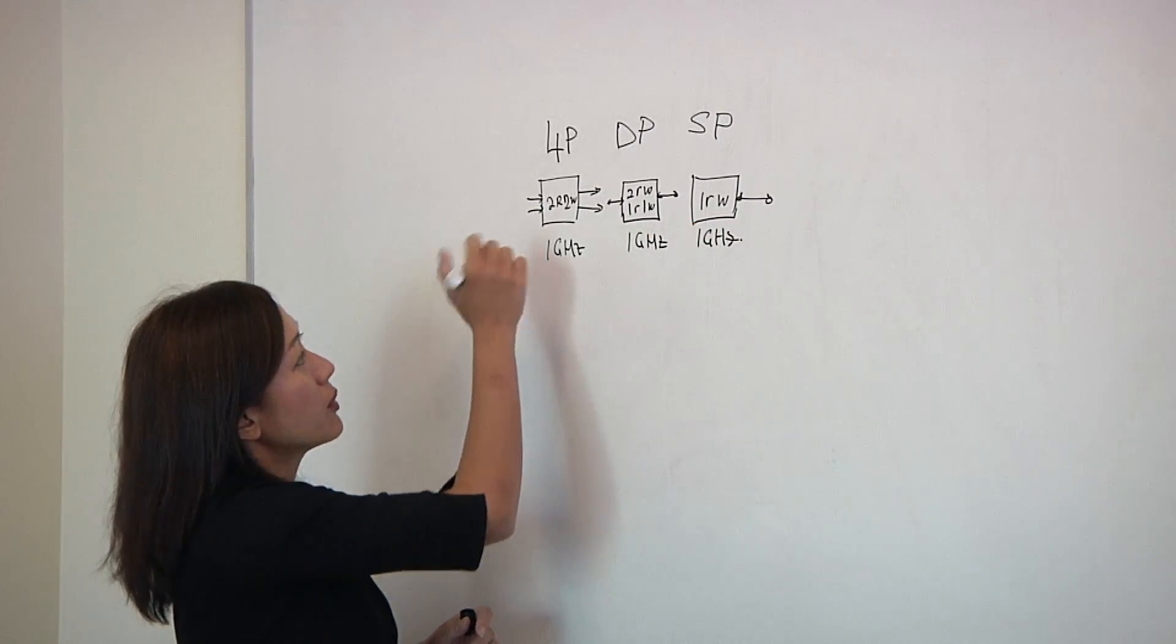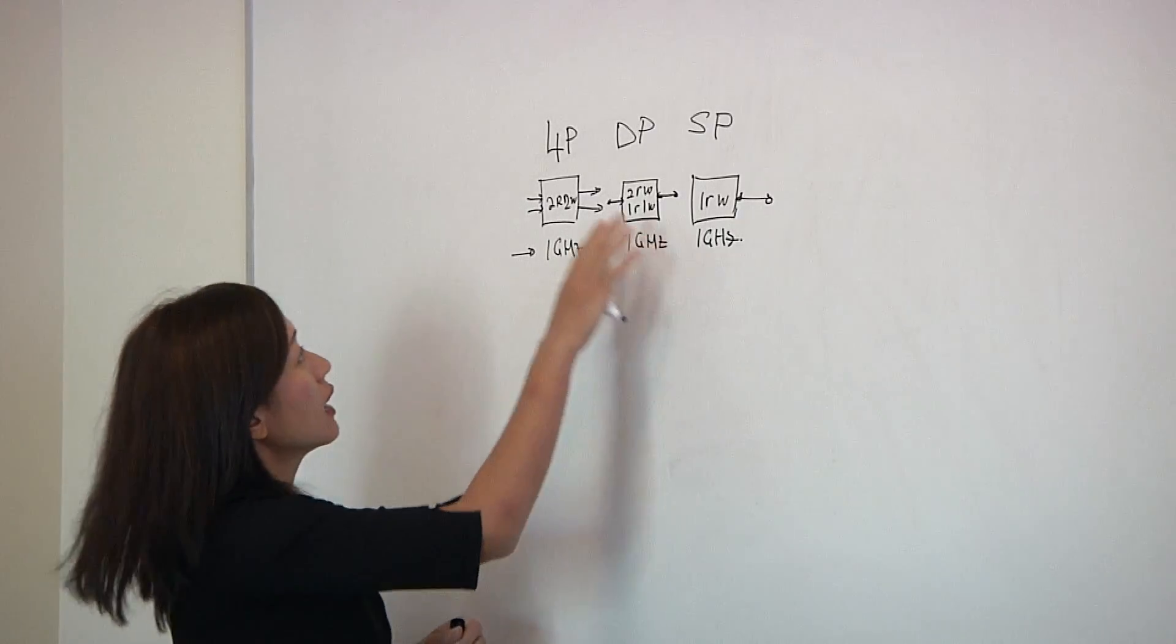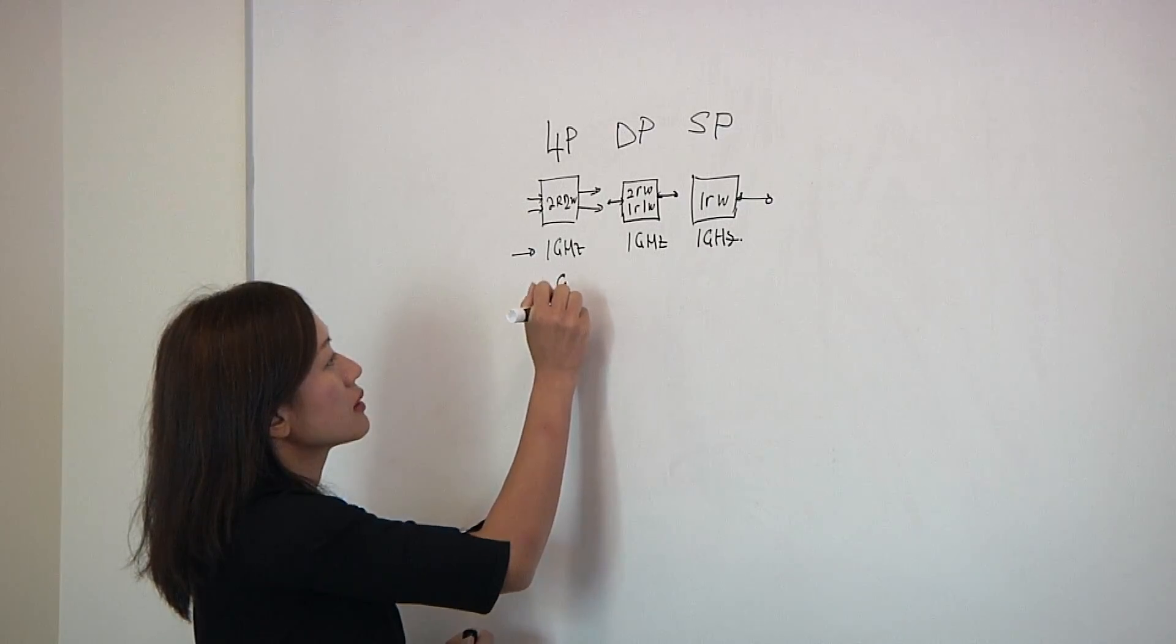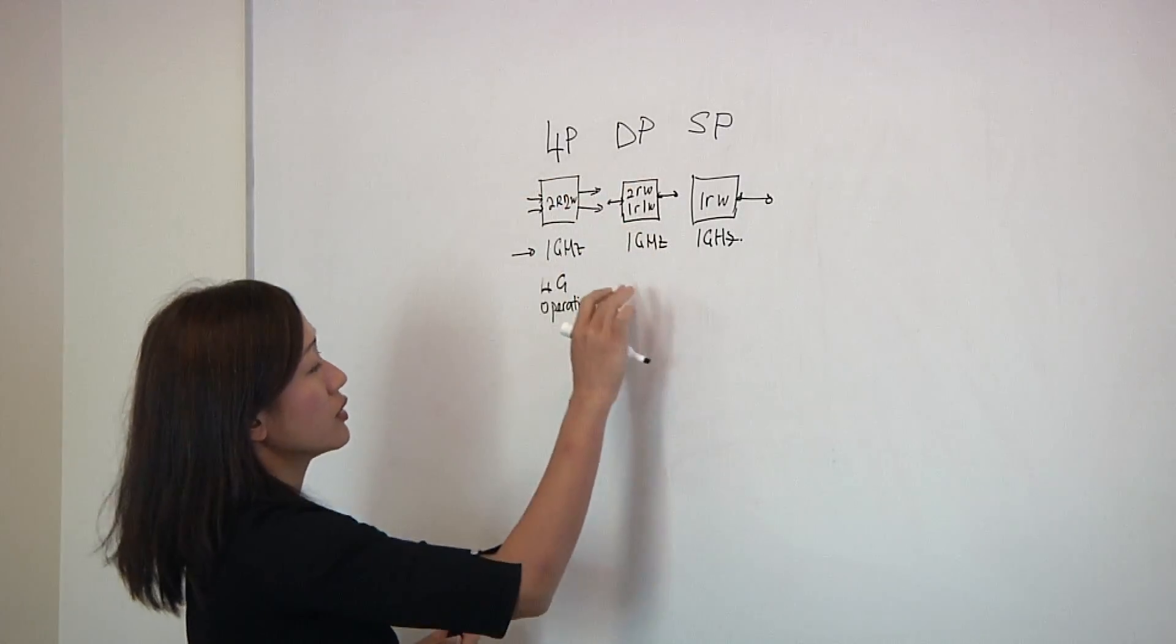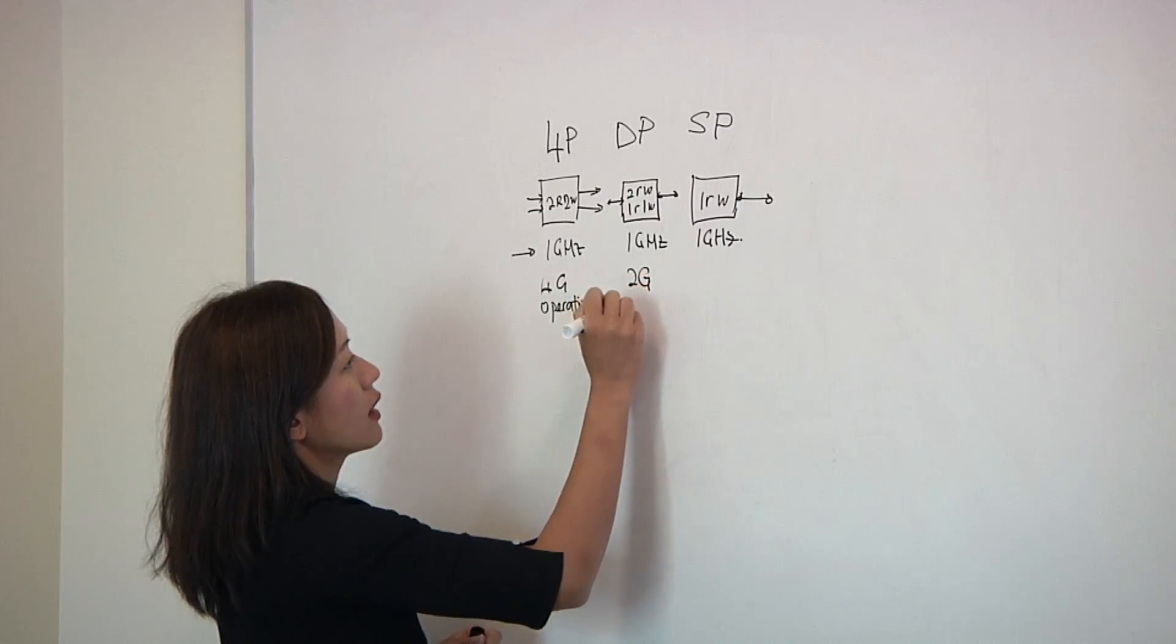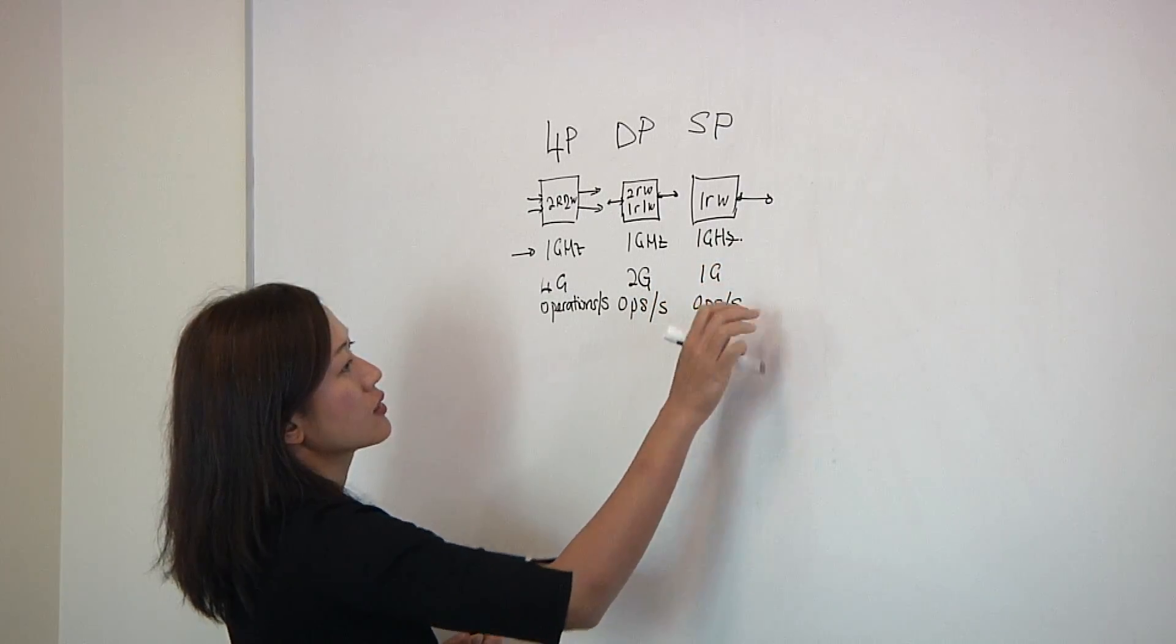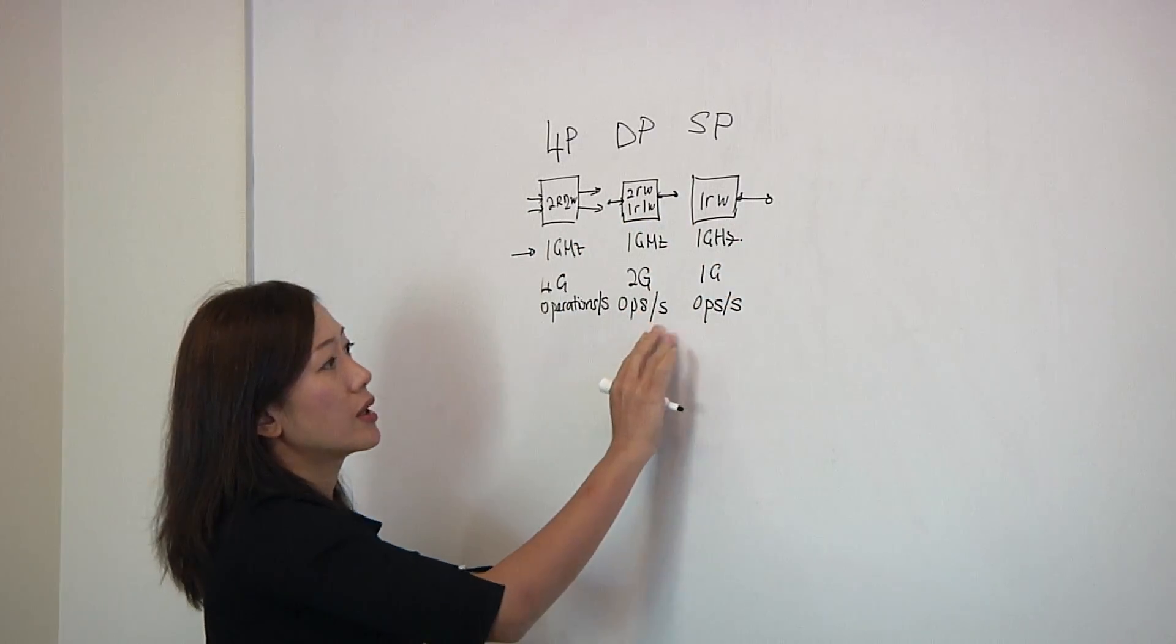Now with the same performance, if you look at operations per second, with the four-port architecture you are able to do four giga operations per second because of this multiport architecture. With the dual-port, it's giving me two giga operations per second, and this is one giga operations per second.